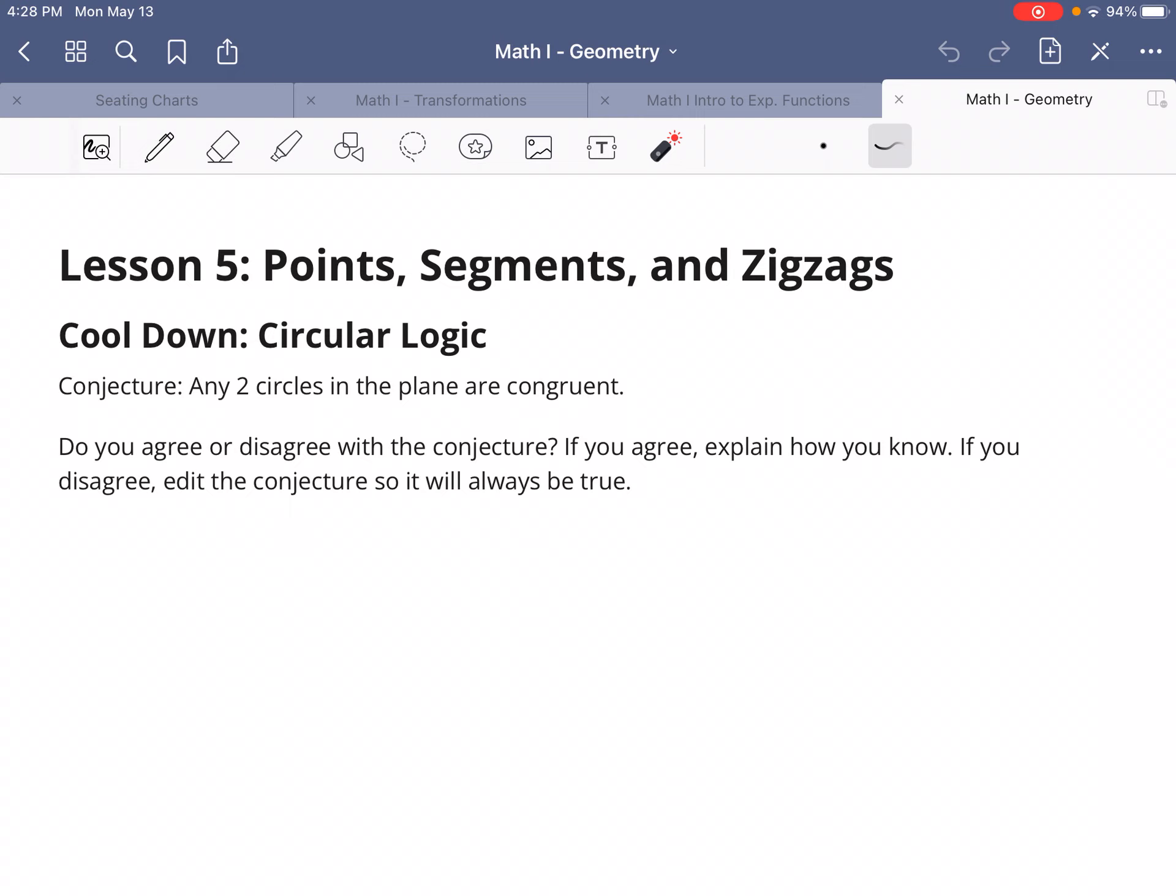Now, do you agree or disagree with this conjecture? Do you think that any two circles in the plane are congruent? If you agree, explain how you know. If you disagree, edit the conjecture so it will always be true.